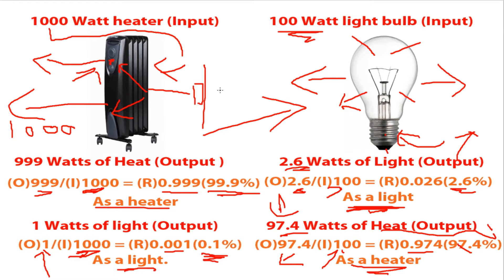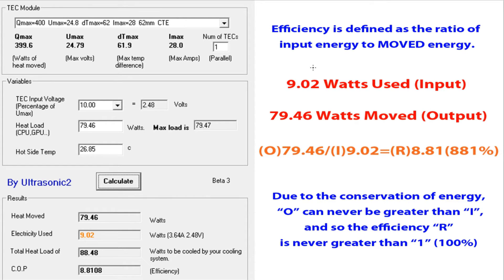Okay, let's move on to something more complicated. How about a TEC? When it comes to TEC efficiency, it's just about always defined like this. Efficiency is defined as the ratio of input energy to moved energy. Everyone I've ever talked to about TECs, when they start mentioning TEC efficiency, they're always talking about input power versus moved energy. So, that's what we're going to define it for in this example. Now, this is taken from my TEC calculator, which you can get from ultrasonic2.com. And we're using a 400 watt TEC. And we're applying 10% of its input voltage, which is 2.48 volts. And if we work out the electricity used in watts, that is going to draw 3.64 amps at 2.48 volts, which is 9.02 watts.